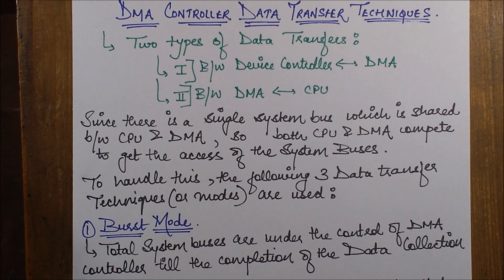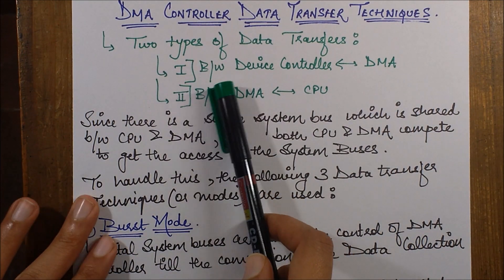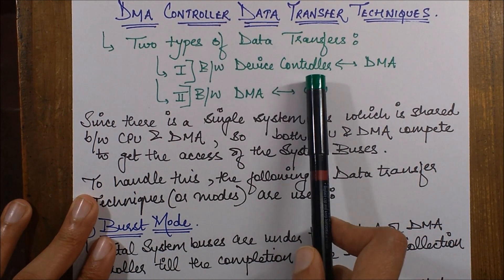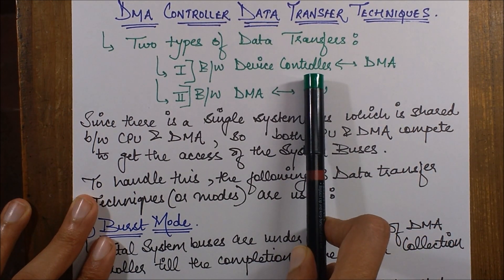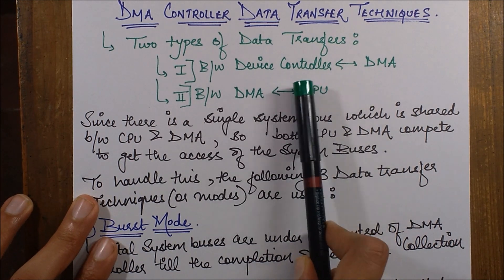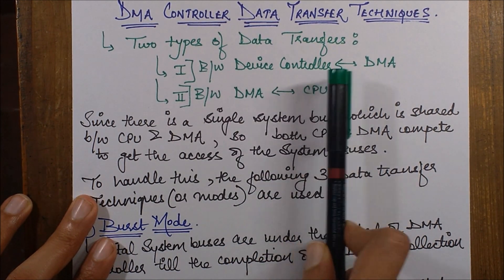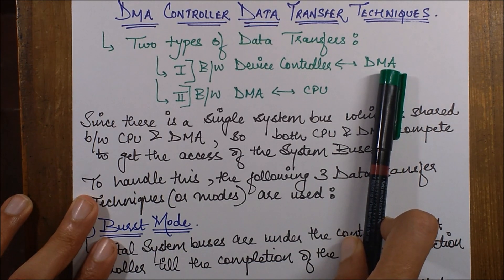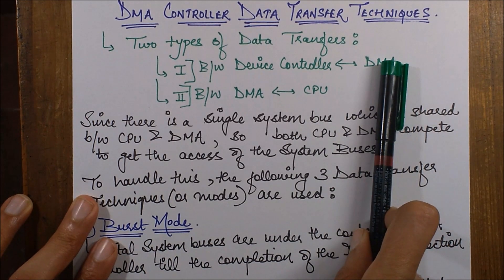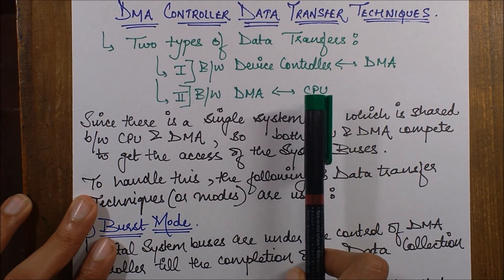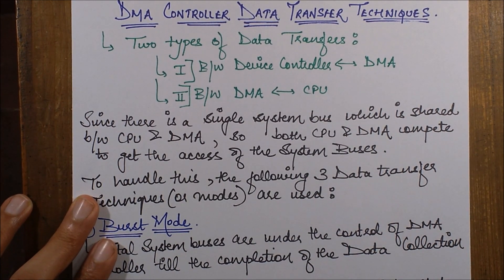The first type is the data transfer that occurs between the device controller and the DMA. There can be multiple device controllers, but taking one device controller as an instance, the data transfer between a device controller and DMA is one type. The next is the transfer between DMA and the CPU. So there are two basic data transfers that occur.